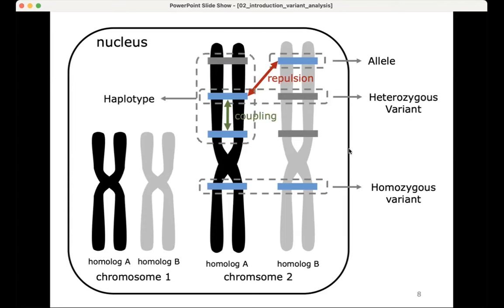If we look at blocks that typically inherit together — alleles that are close to each other on the same chromosome — we talk about haplotypes. Haplotypes are a set of alleles in coupling phase on the same chromosome that are typically inherited as one block. Haplotypes can be very relevant for all kinds of genetic analyses.